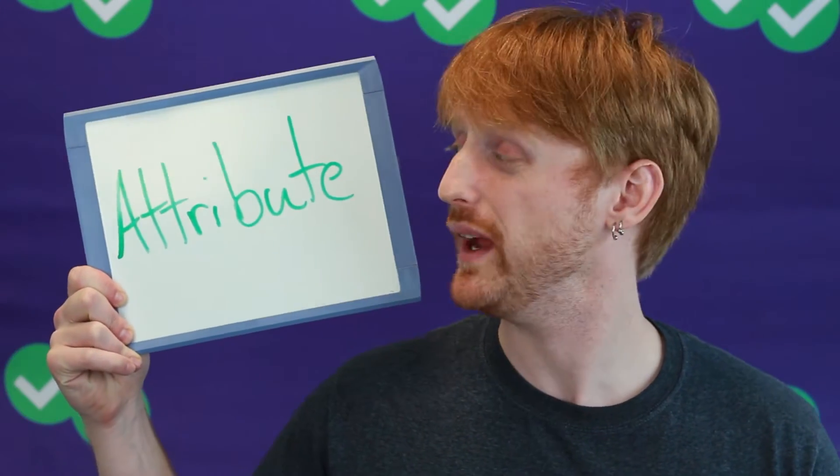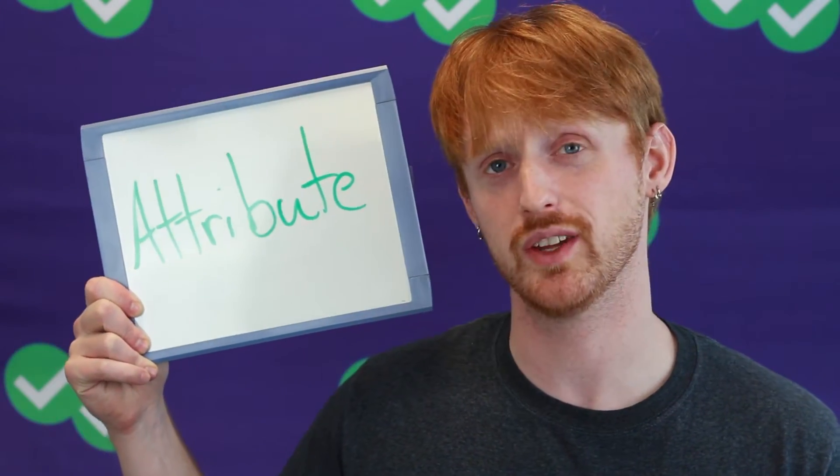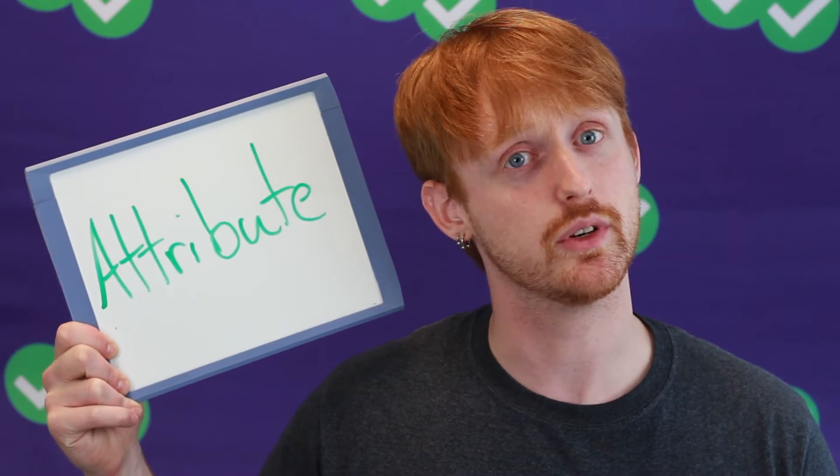There are actually two ways to pronounce our first word, because as a verb it's 'attribute,' and as a noun it's 'attribute.' That's one of the tricky things about English — having that stress difference. It's 'attribute' as a noun and 'attribute' as a verb.